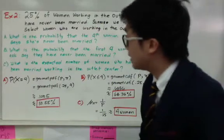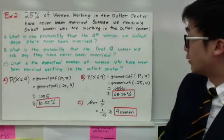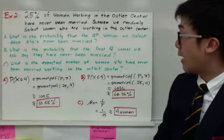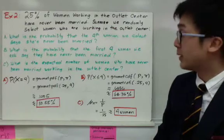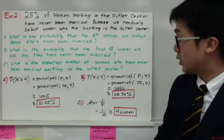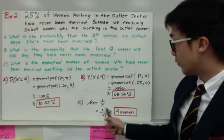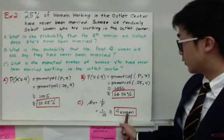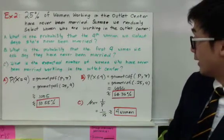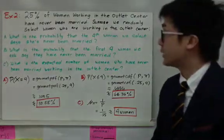The third question: what is the expected number of women who have never been married working in the outlet center? The question asks for the expected number of women. The formula we'll use is the mean of the geometric distribution. To find the mean of the geometric distribution, it's 1 over P. Using the formula, 1 over 0.25 equals 4 women. To answer letter C, there will be 4 women in the outlet center expected to have never been married in this particular example.